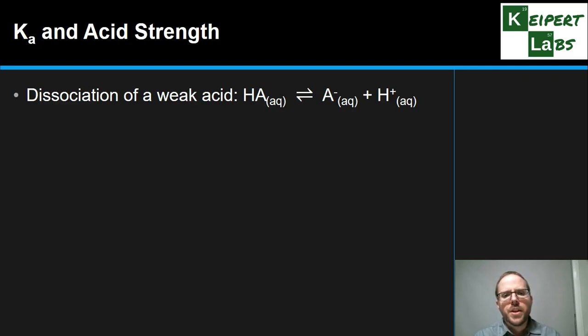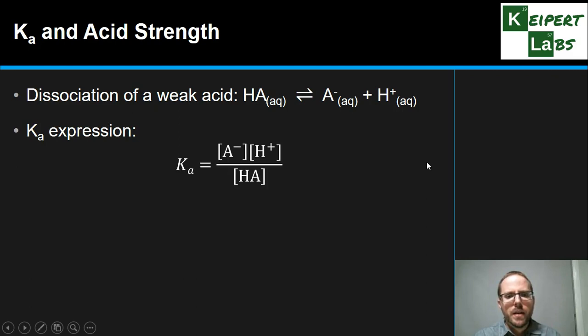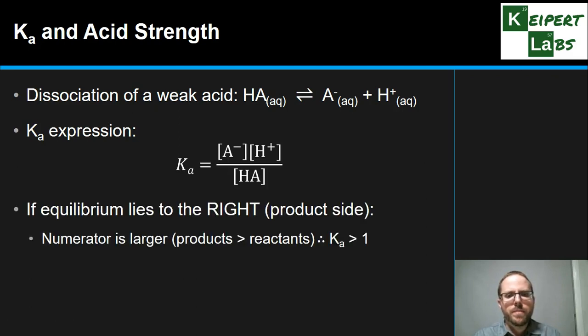Now one of the things that we know is that you can have a strong acid or you can have acids with a degree of weakness, some being weaker or stronger than others. The dissociation of a weak acid, this is our general kind of equation that we see. And so this is our Ka expression. Now if we just look at this as a general form, if the equilibrium up here lies to the right-hand side, the product side, the numerator here is going to be larger than the denominator. That is, more products than reactants. So our Ka is going to be greater than one.